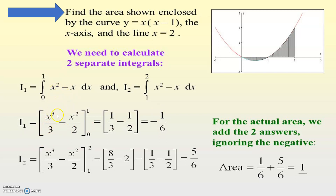Integration of x squared is x cubed upon 3; integration of x is x squared upon 2. So x squared minus x follows the same for I₂. For I₁: lower limit 0, upper limit 1 gives 1 upon 3 minus 1 upon 2, which is minus 1 upon 6. For I₂: x cubed upon 3 minus x squared upon 2, lower limit 1, upper limit 2 gives 8 upon 3 minus 2 minus 1 upon 3 minus 1 upon 2, equaling 5 upon 6. Adding both areas and ignoring the negative sign (since area is always positive): 1 upon 6 plus 5 upon 6 equals 6 upon 6, so exactly 1 square unit.